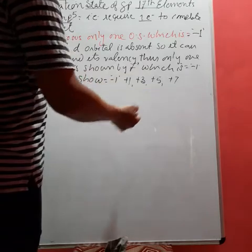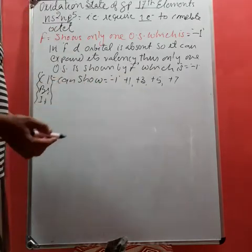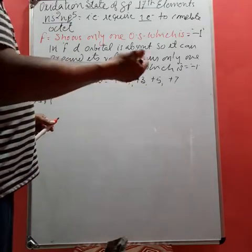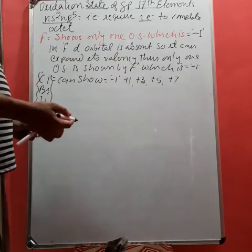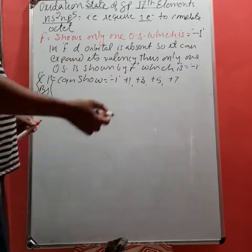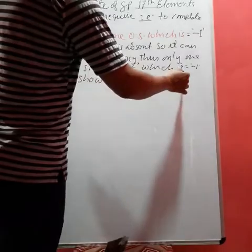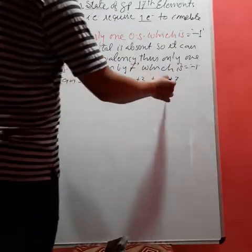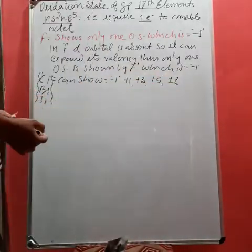How is this possible? It is possible due to excitation of electrons in the vacant d orbital. Thus, after complete excitation, seven orbitals become unpaired, therefore it can show +7 oxidation state.